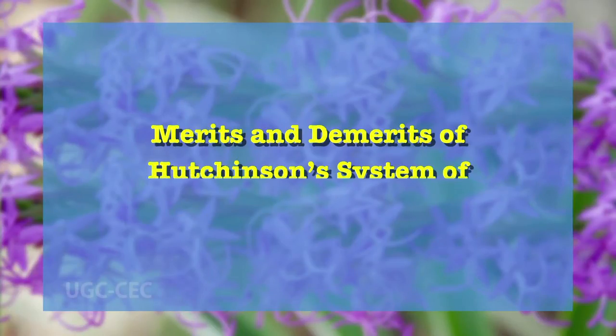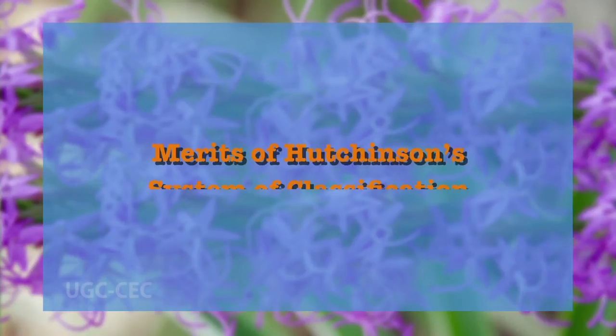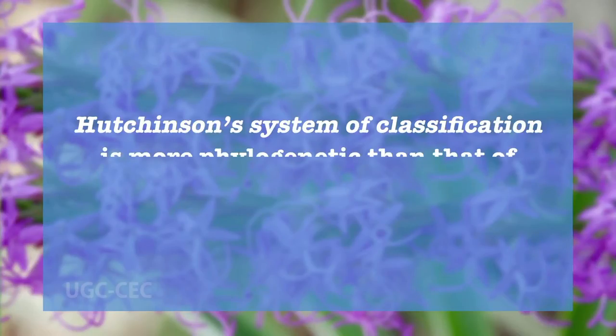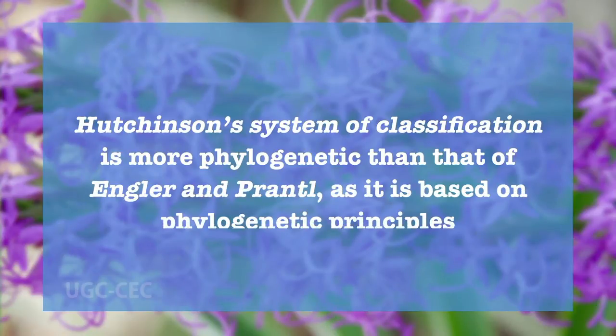Finally, let us deliberate on our last objective, that is the merits and demerits of Hutchinson's system of classification. The system of Hutchinson, being based on a number of sound phylogenetic principles and studies of a large number of plants at his disposal at Kew, shows the following improvements over earlier systems. The system is more phylogenetic than that of Engler and Prantl, as it is based on phylogenetic principles generally recognized by most authors. The treatment of Magnoliales as the starting point in the evolutionary series of dicotyledons is in agreement with prevalent views.